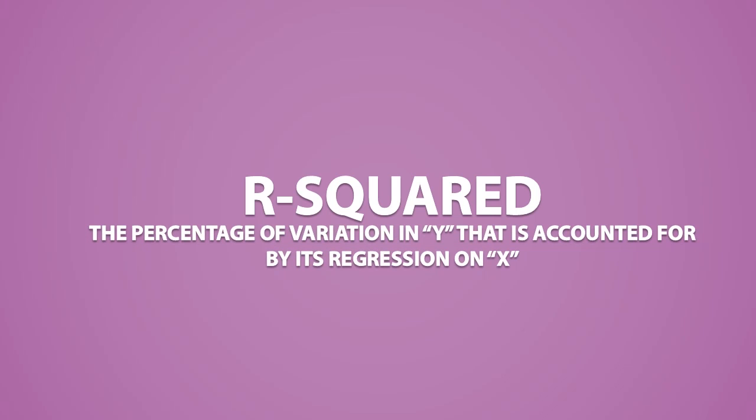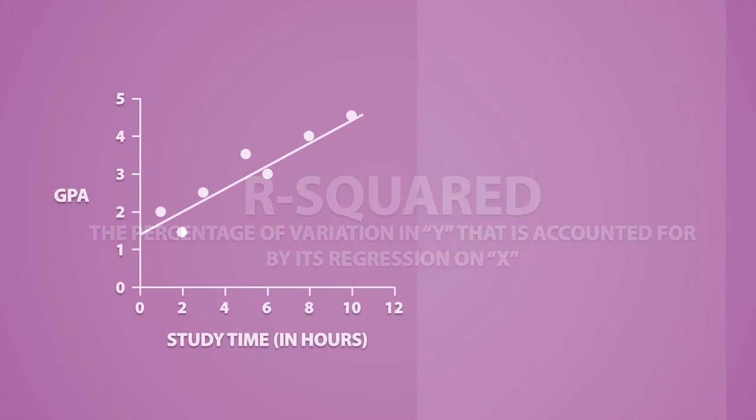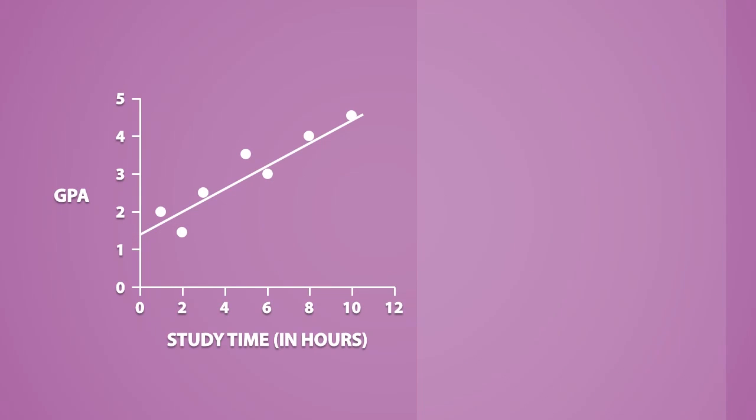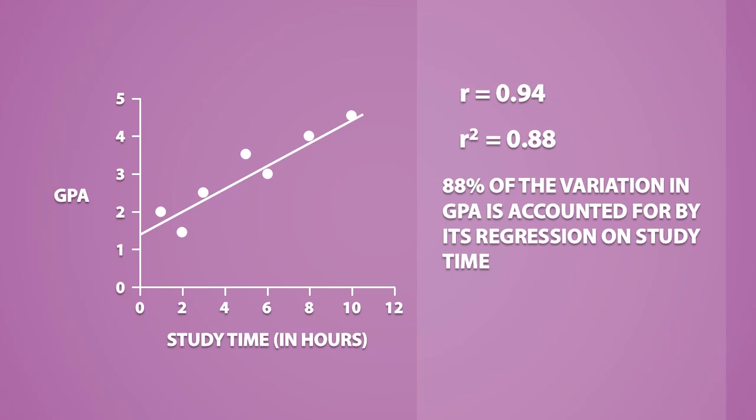Note that r-squared also tells us the percentage of variation in y that is accounted for by its regression on x. So in our previous example, we had calculated r to be 0.94. The r-squared value would be equal to r times r, or 0.88. So this tells us that 88% of the variation in GPA is accounted for by its regression on study time.